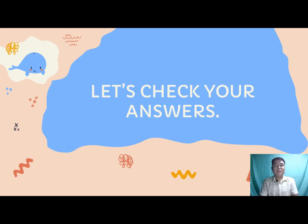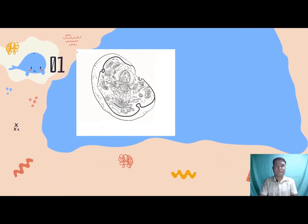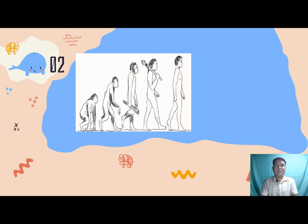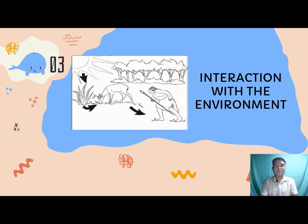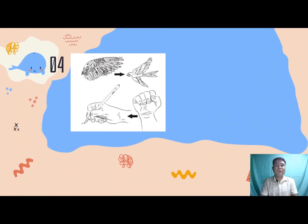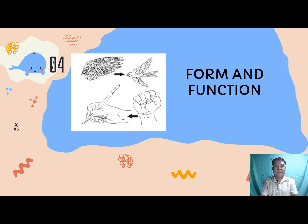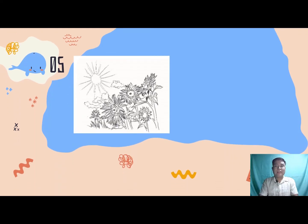Let's check your answers. See to it that you exercise the policy of honesty when checking your answers. For number one, what is being depicted is a cell. For number two, the depicted picture is evolution. For number three, the answer is interaction with the environment. For number four, the answer is form and function. For the last item, the answer is energy and life. I hope you perfected our short activity, showing that you really understand our discussion.